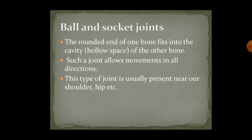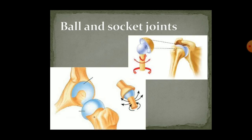Ball and socket joint: the rounded end of one bone fits into a cavity or hollow space, forming the joint. This joint allows movement in all directions, i.e., 360-degree movement. This type of joint is usually present near our shoulder or hip. As you can see in the picture, the ball is present and there is a hollow space in which the bone is fixed and it can move in all directions.